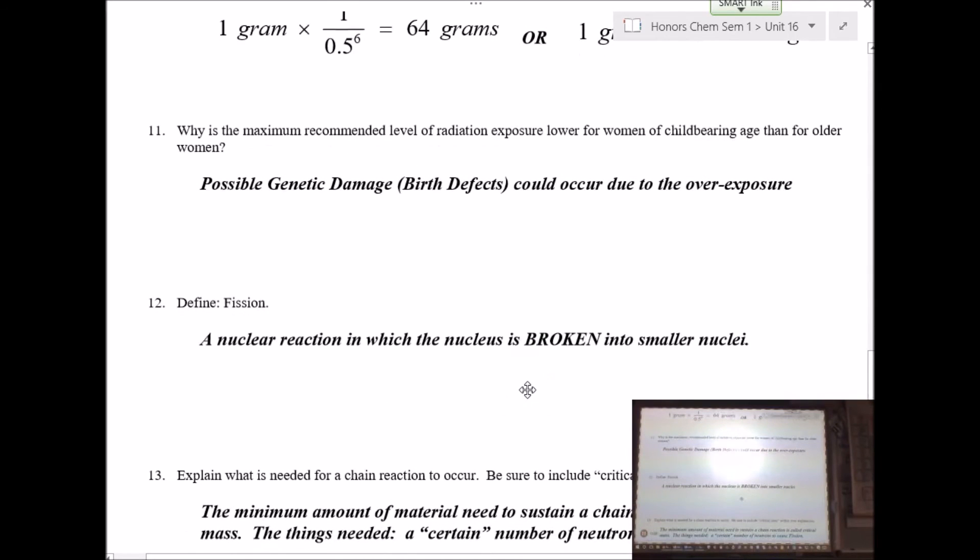Number 11, why is the maximum recommended level of radiation exposure lower for women of childbearing age than older women? Younger women have kids. They're passing on their genetic material to the next generation. Old women don't have babies. So, if you're thinking about having a career where you're maybe an x-ray technician or you're planning on working around things that are radioactive, consider whether you want to start a family or not. There's so many other fields of chemistry. Stay away from the radiation. That's my advice.